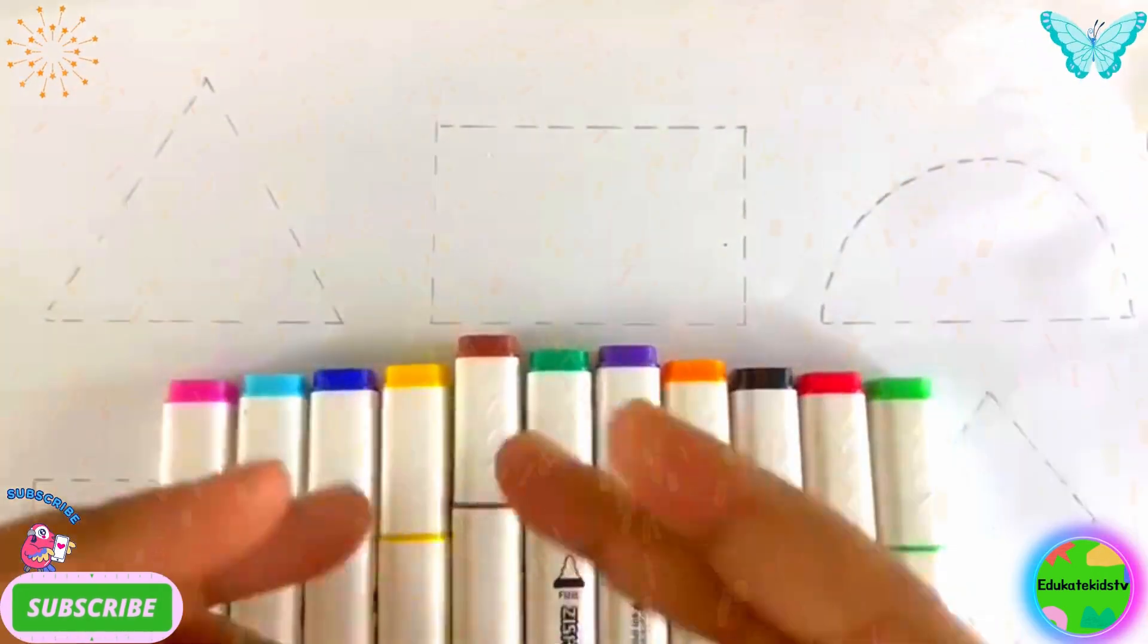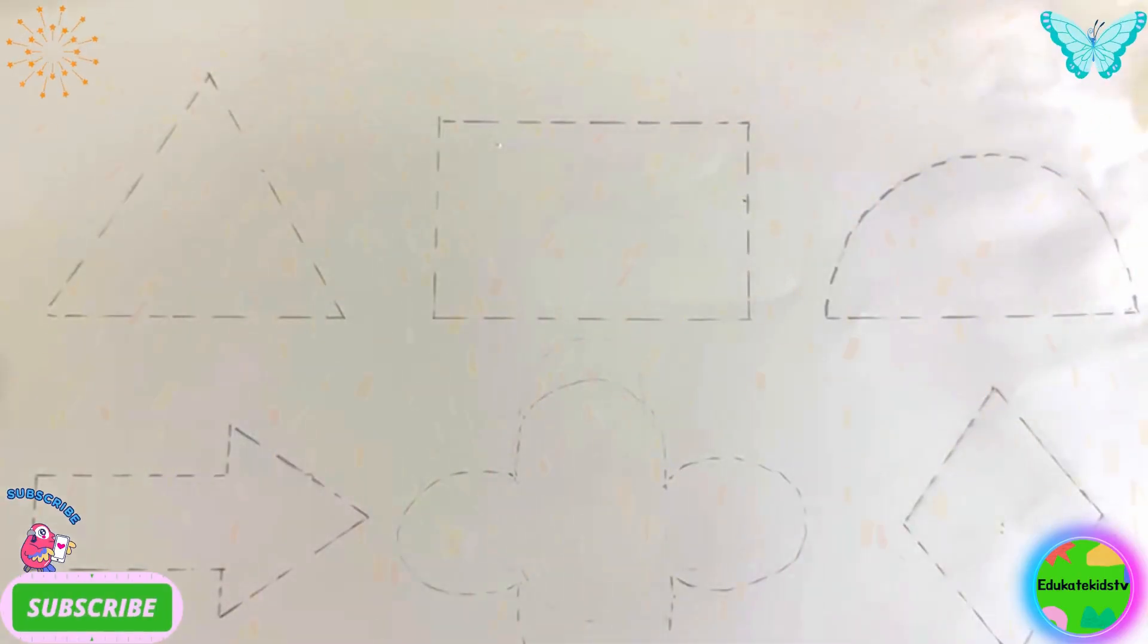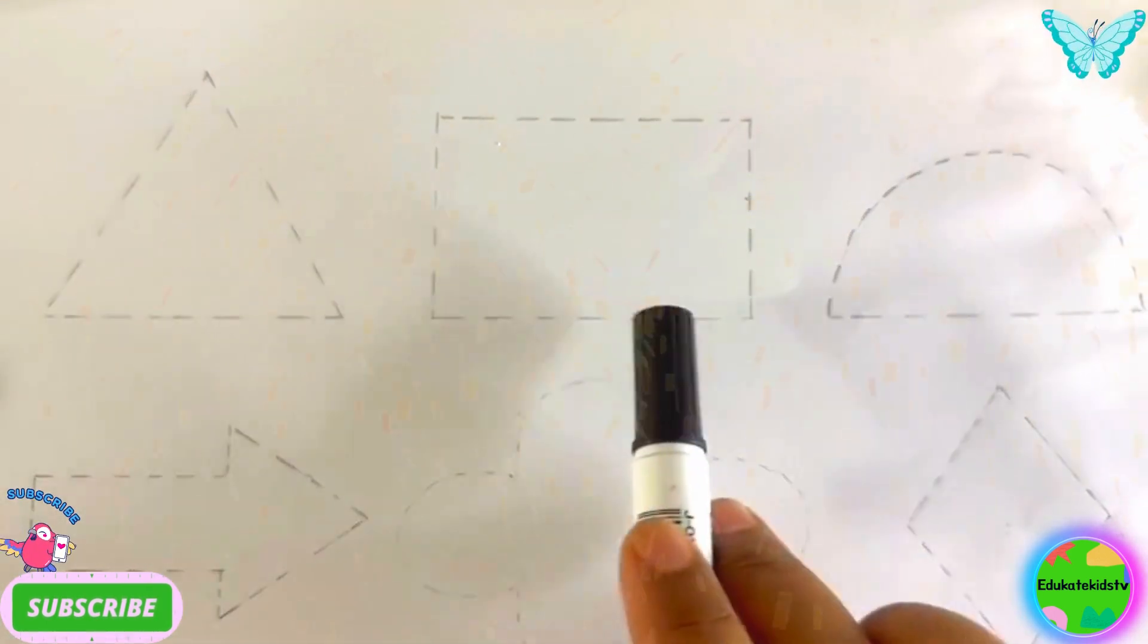Hello kids, how are you all? Good kids. As well, and now we are going to draw these shapes with black marker and we are going to color them. Triangle, rectangle.